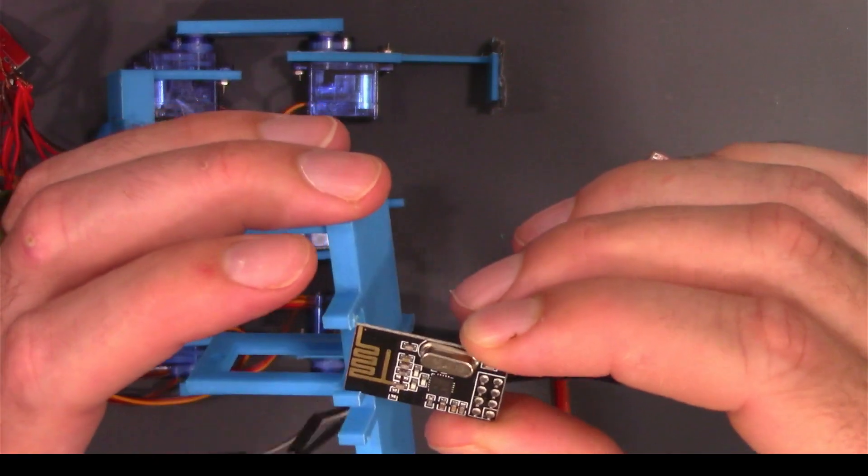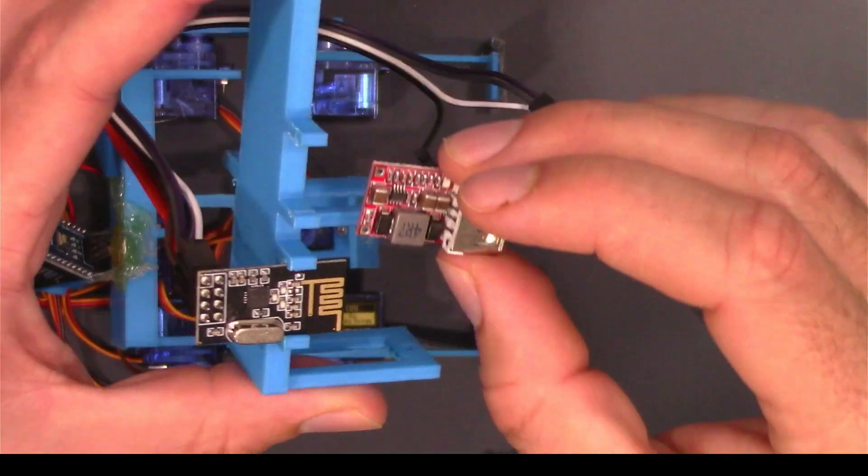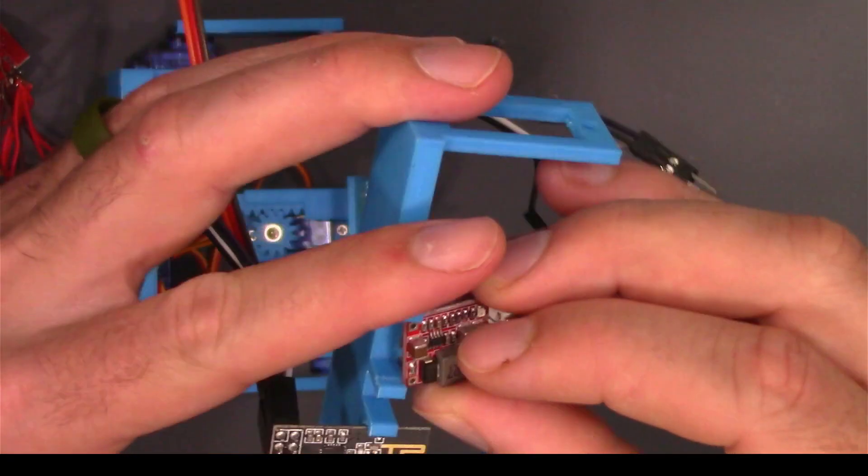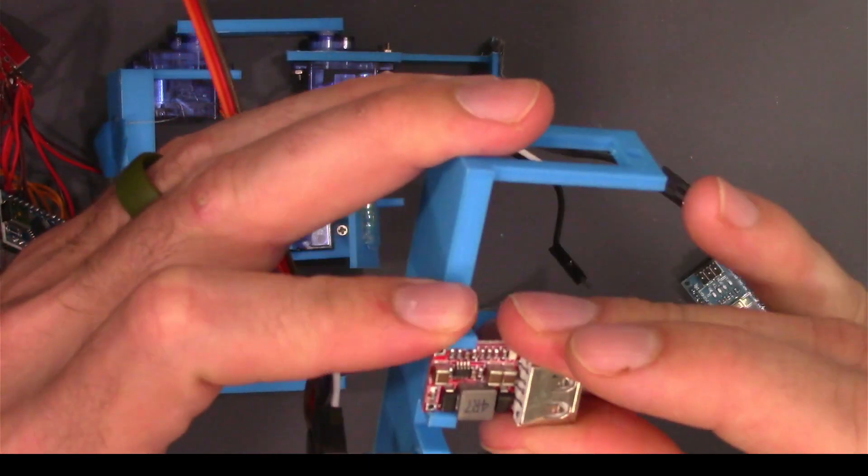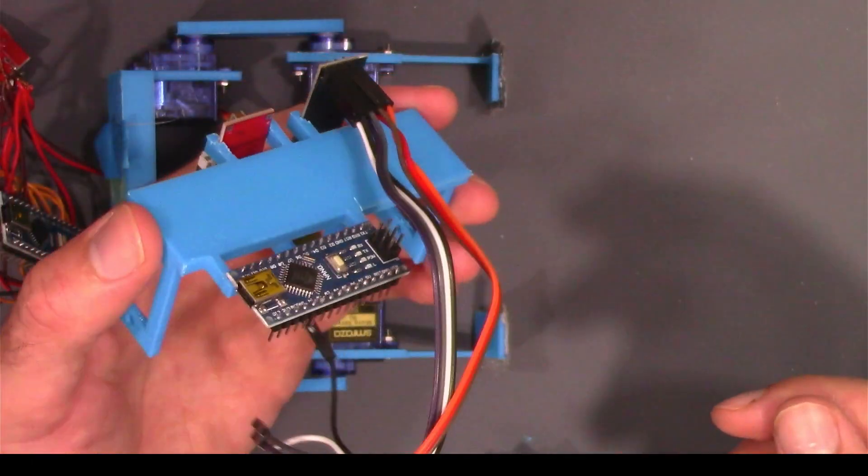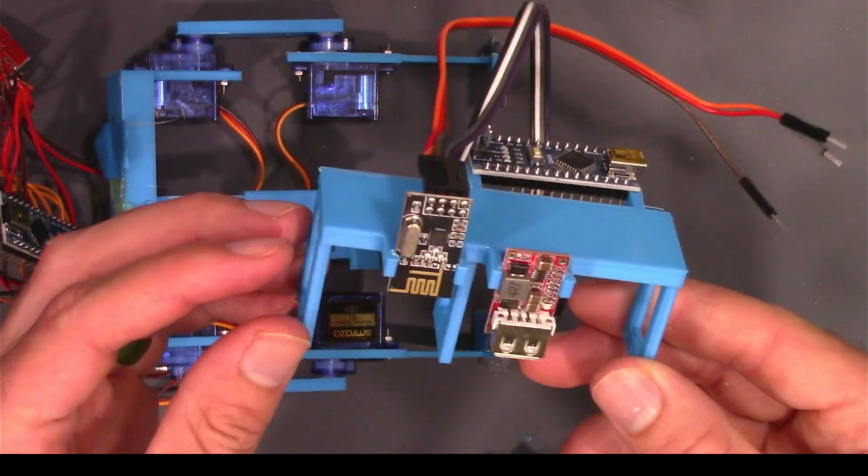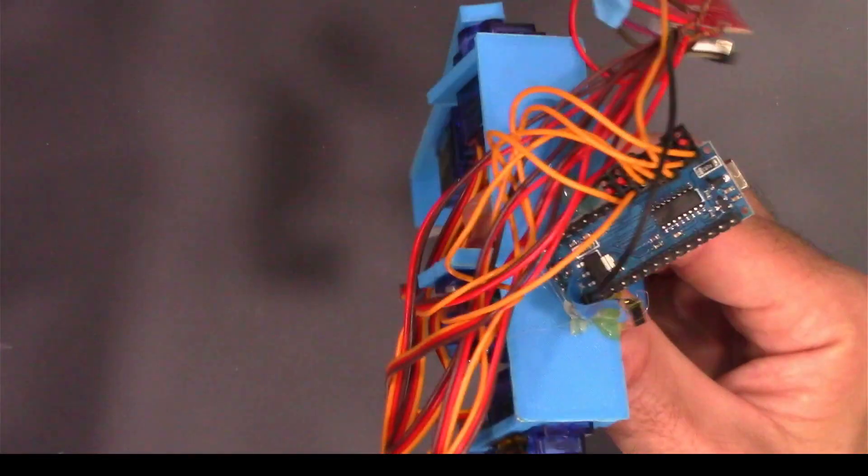The radio transceiver will go right here. The power module can go in the center and this is a lot better than this.